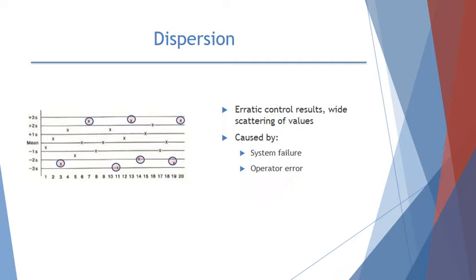A dispersion consists of erratic control results that are all over the place — not equally distributed. You can see a wide scattering of values in the image. This can be caused by system failure, operator error, etc. If you notice any of these patterns on your QC charts, you should take a closer look at your QC to make sure it is acceptable.